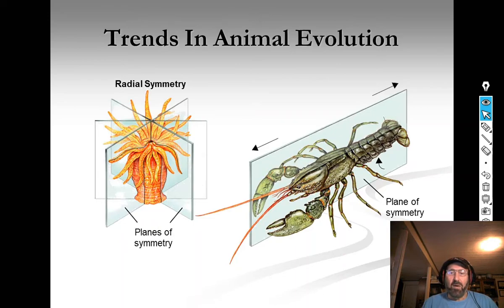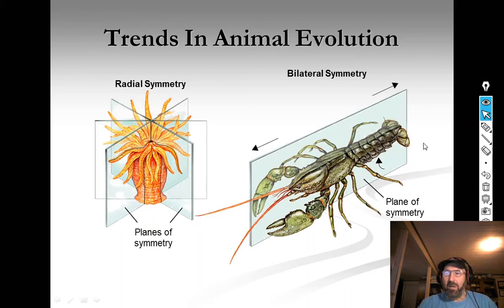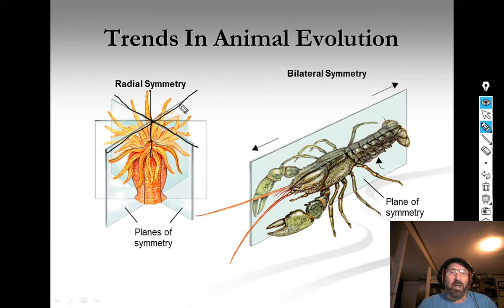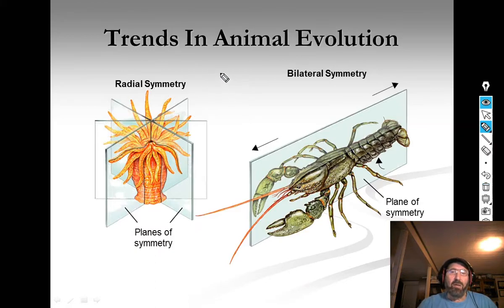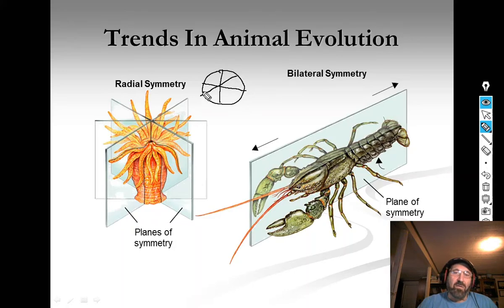I also want to talk about the symmetry of animals, because it's one of the traits that makes a particular group what they are. The first type is radial symmetry. Radial symmetry simply means you can cut the animal like a pie and always have a mirror image on either side. For example, if I cut this anemone straight down, this side and this side are mirror images. Think about a radial tire or a pizza — you can cut it in a series of ways and still have both sides the same.